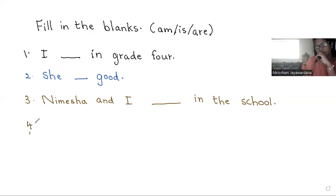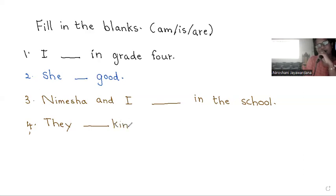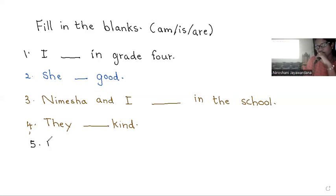Number four. They blanked. Last row — can you see the screen? Can you see the letters? It blanked.